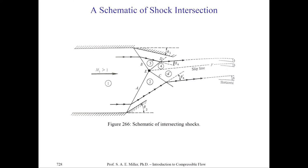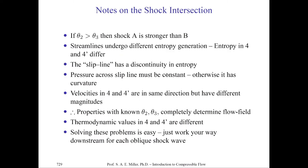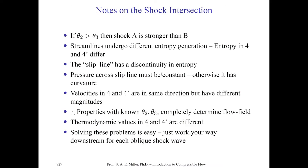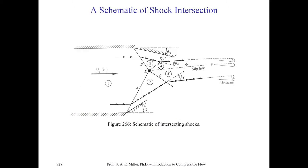Of course, we can set theta2 equal to theta3, and then we'd have equal entropy in 2 and 3, and 4 and 4 prime. If theta3 and theta2 were equal, region 4 would only be 4 with no 4 prime, as they'd all be equal with equal thermodynamic properties and velocities. The slip line is actually a discontinuity in entropy — the change in entropy is instantaneous across the slip line from 4 to 4 prime. Just like a shock wave is a discontinuity in an inviscid flow, the slip line is also a discontinuity in the inviscid flow. The pressure across the slip line must indeed be constant; otherwise there would be curvature in the slip line.